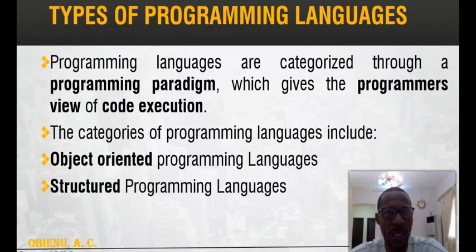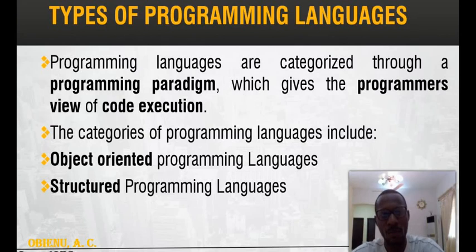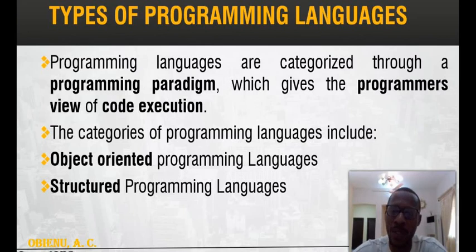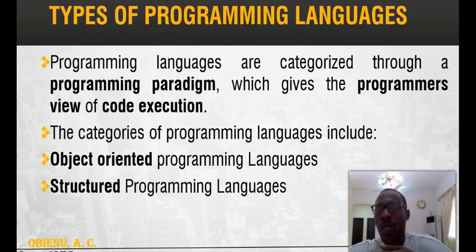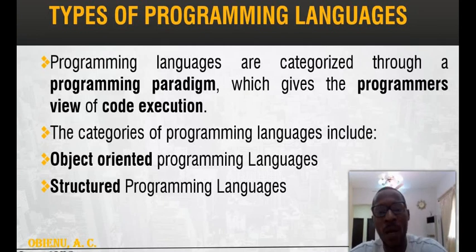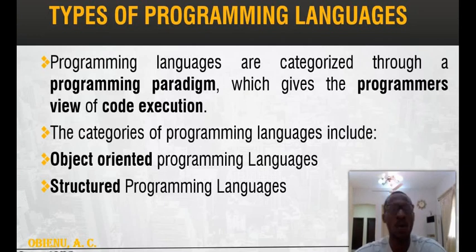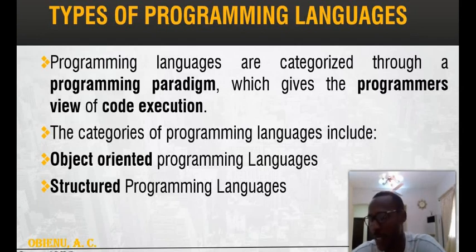Programming languages are grouped based on the paradigm — the ways in which those programs are formed. That means the kind of classifications. For example, we have various buildings in our society and we call some a bungalow, some a duplex, some a skyscraper, and those names come about by the structures of those buildings. Likewise in programming language classification, those names come as a result of the programming paradigm, which gives the programmer's view of code execution.